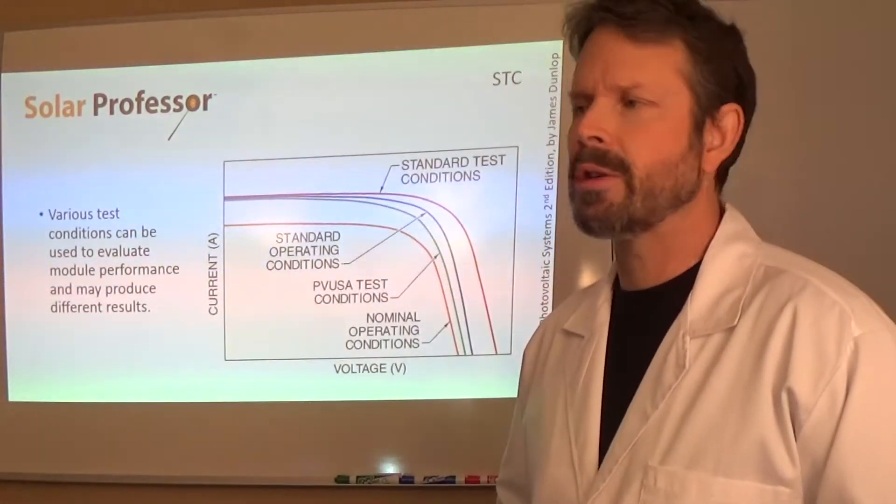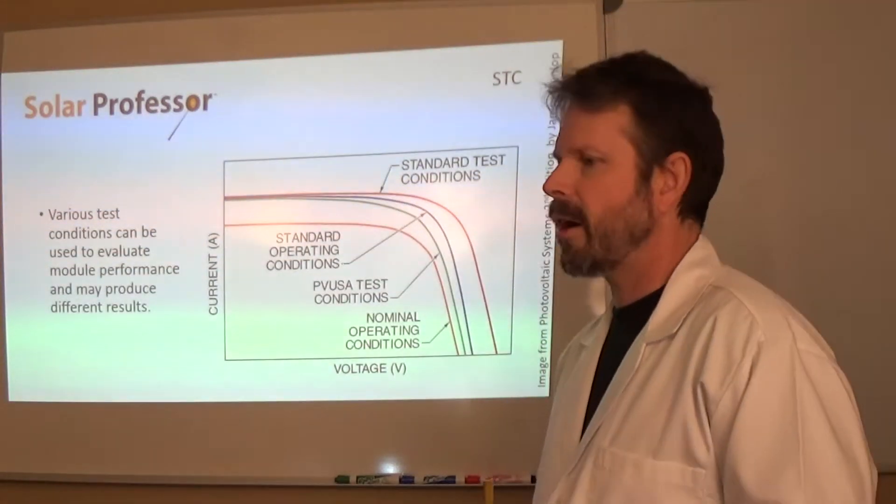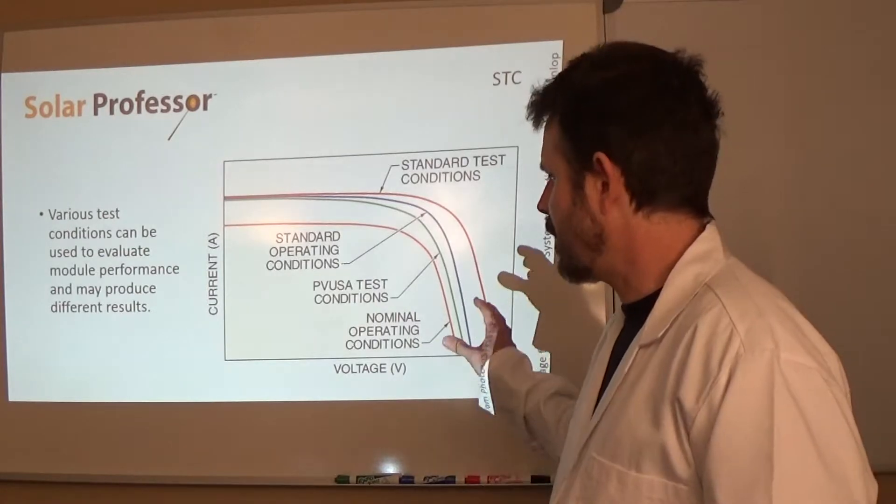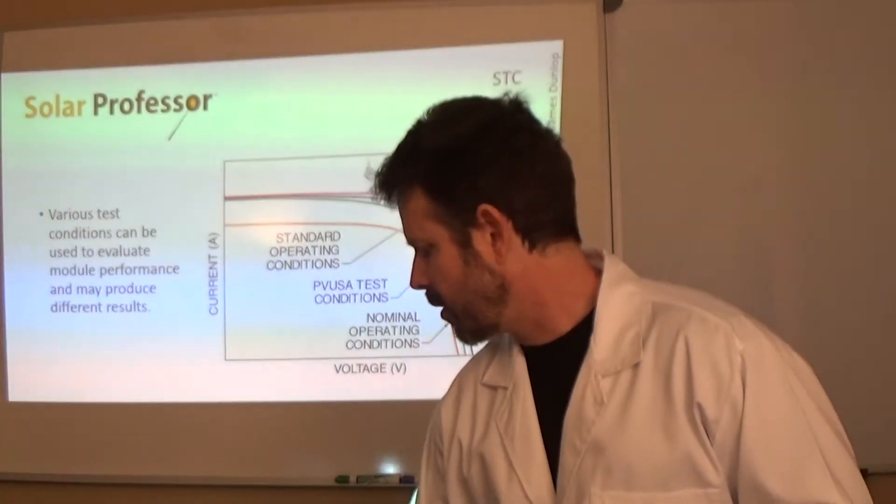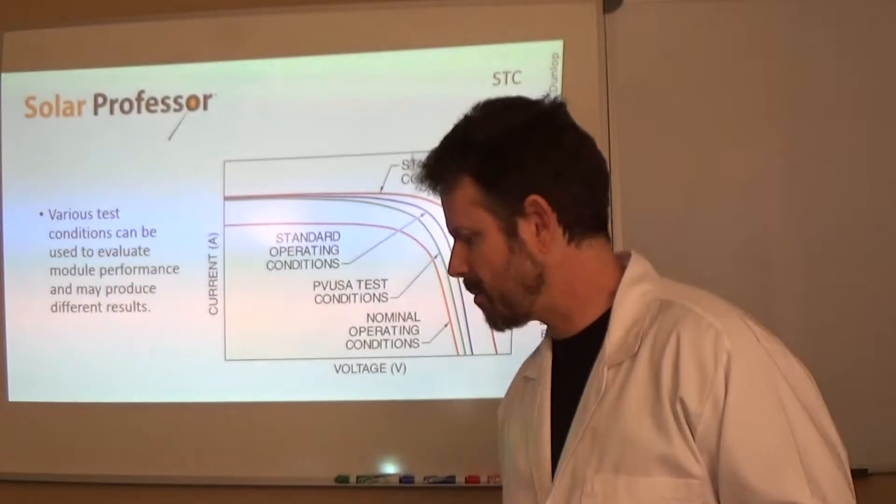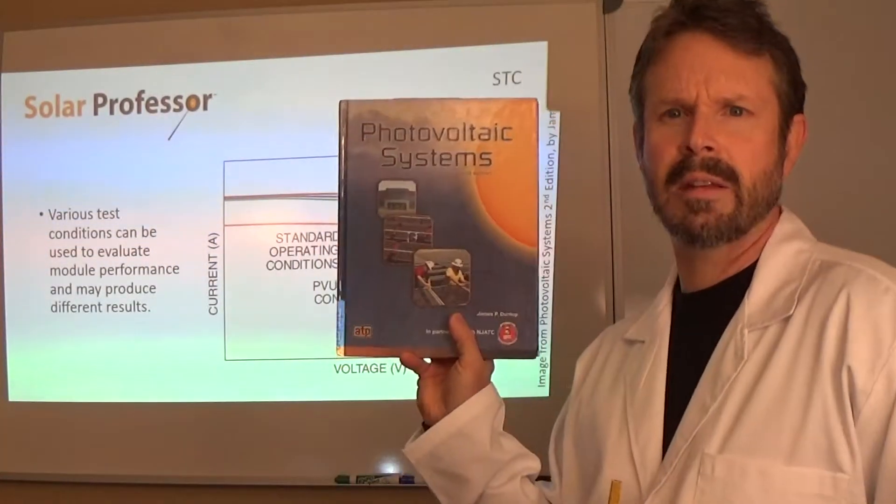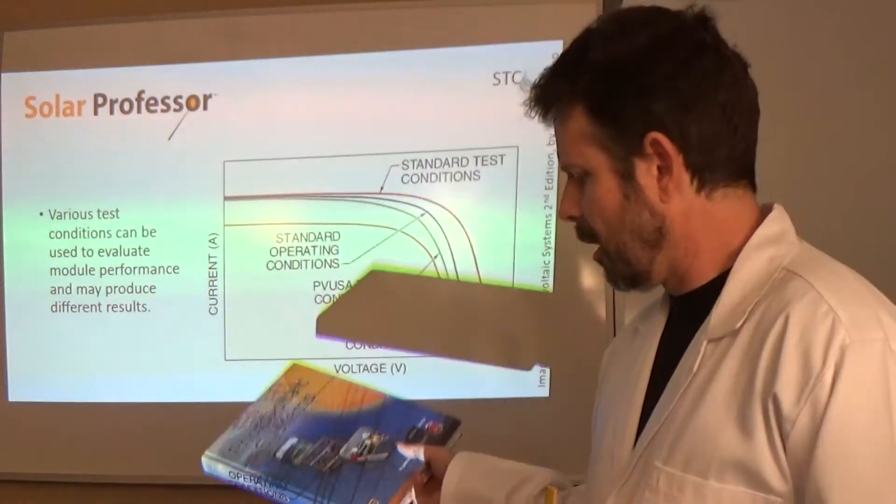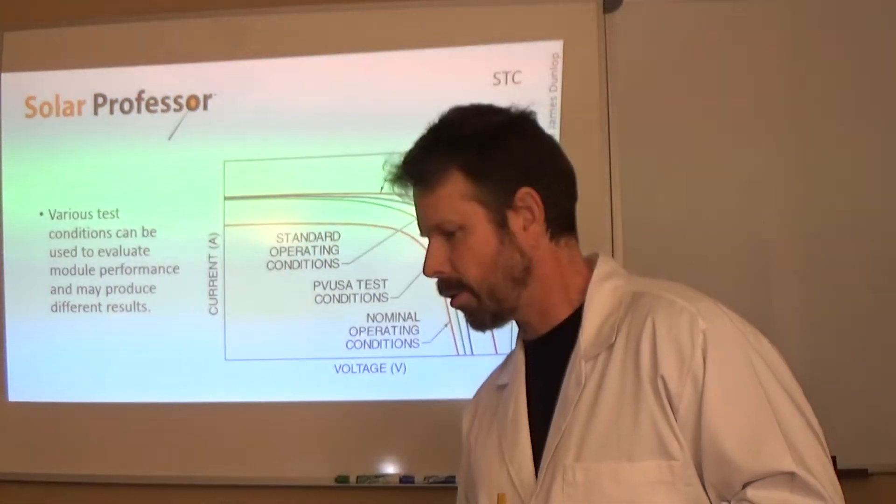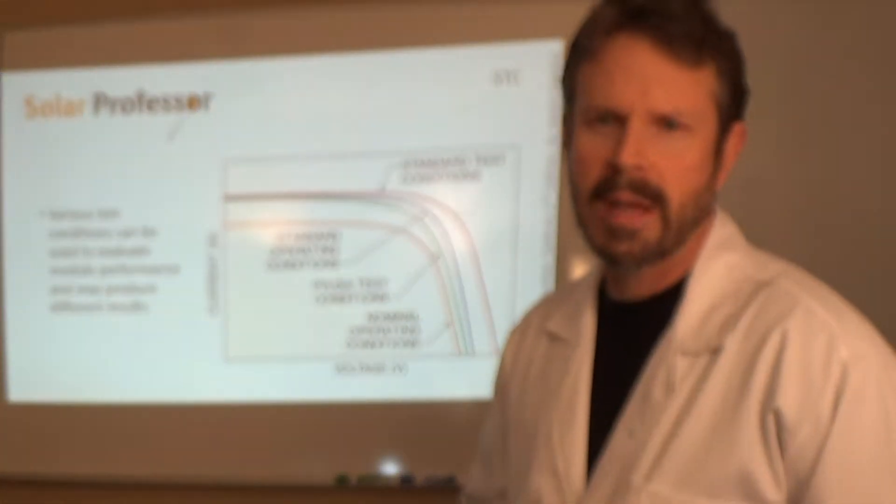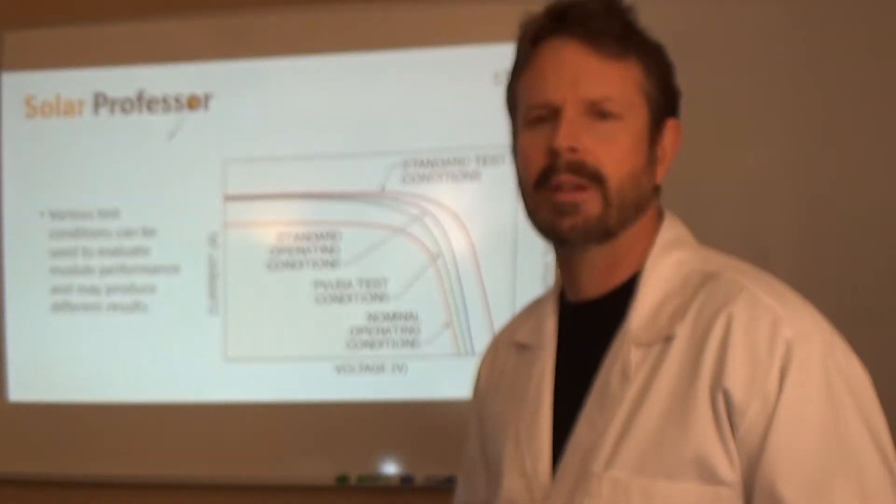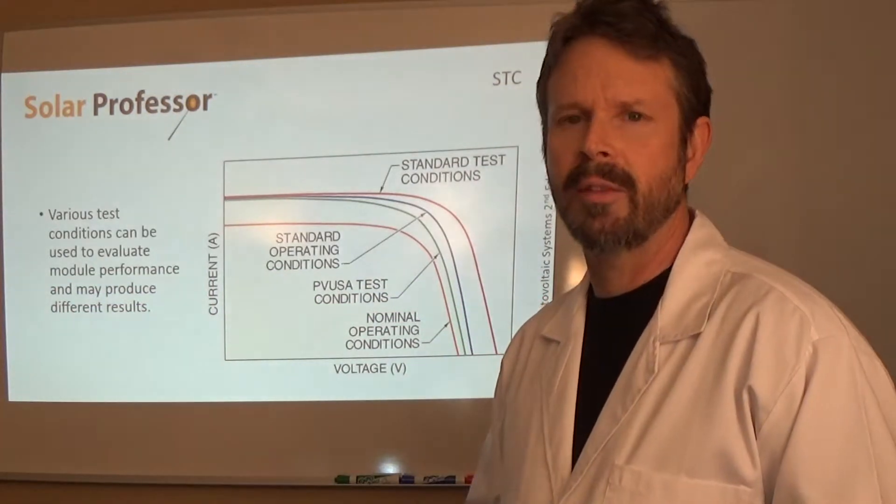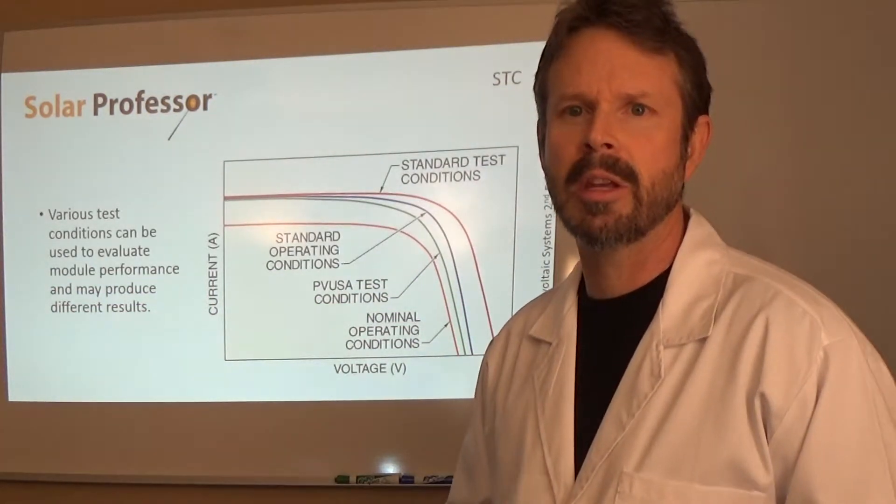All right, a couple more things I do want to mention, so let's move on through. There's various test conditions in the industry. These are identified in the book. And you know I love the book, especially for those who are taking the NABCEP exam. Photovoltaic Systems by James Dunlop. I have the third edition here. It is the solar manual for folks taking the NABCEP exam. It's a fantastic read. You really should read the whole thing cover to cover, all 15 chapters, if you're going to be taking that NABCEP exam.